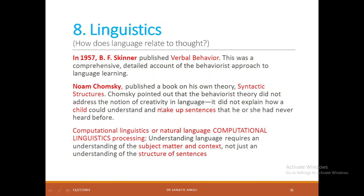Coming to the last foundation, that is linguistics. In 1957, Skinner published Verbal Behavior — a comprehensive, detailed account of the behavioristic approach to learning a language. Then Noam Chomsky, as already mentioned, focused on the syntactic aspect of language. He said a language should be learned not only through verbal behavior, but grammar and a knowledge base must be taken into account — sentence creation is purely based on grammar. Computational linguistics, or natural language processing, is about understanding language through subject matter and context, not just the structure of sentences.